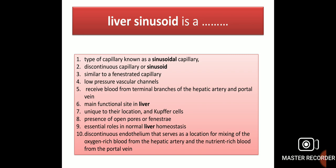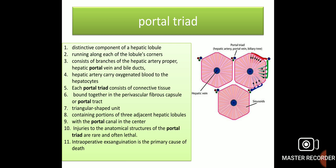The liver sinusoid has a discontinuous endothelium that serves as a location for mixing of the oxygen-rich blood from the hepatic artery and the nutrient-rich blood from the portal vein.